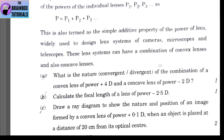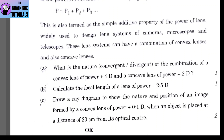Part A: what is the nature — convergent or divergent — of the combination of a convex lens of power +4 diopter and a concave lens of power −2 diopter? Adding: +4 + (−2) = +2 diopter. Since the result is positive, the combination has convergent property — the convex lens's power dominates.